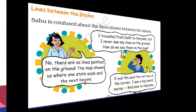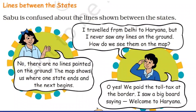Children are talking about these boundary lines. Sabu is confused about the lines shown between the states. He is saying: I traveled from Delhi to Haryana, but I never saw any lines on the ground — how do we see them on the map? The other girl is saying: there are no lines painted on the ground; the map shows us where one state ends and the other begins.